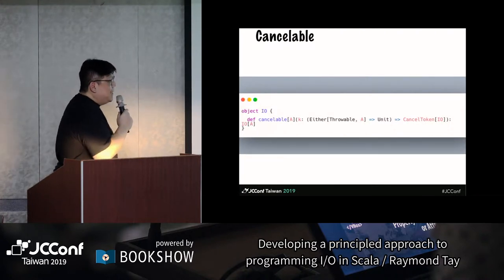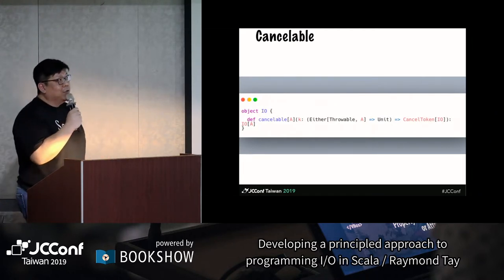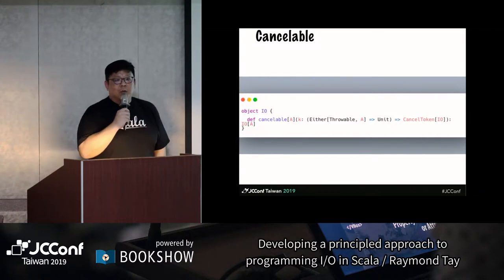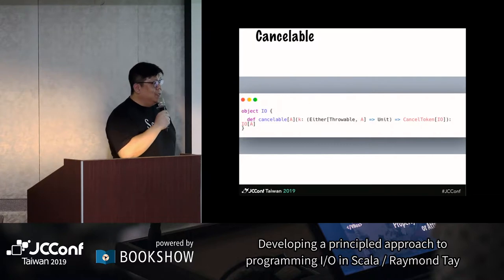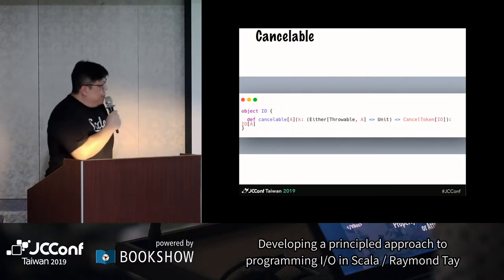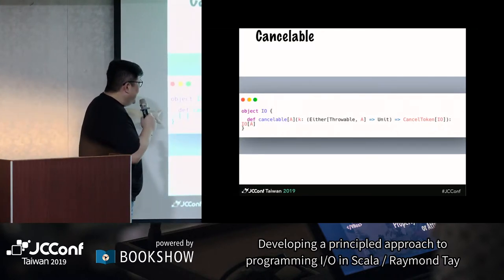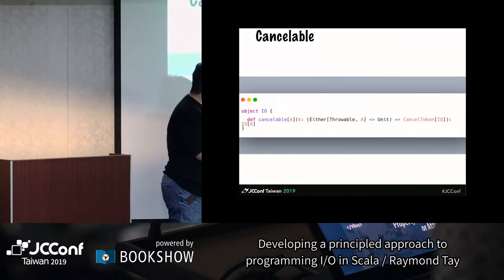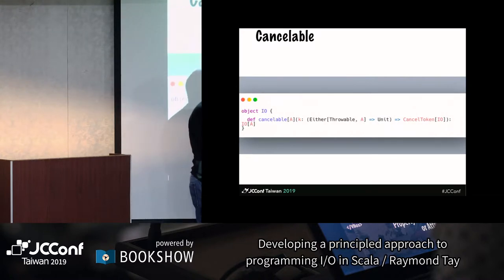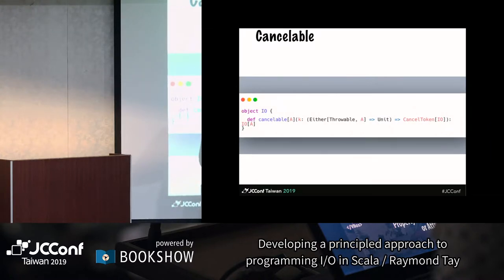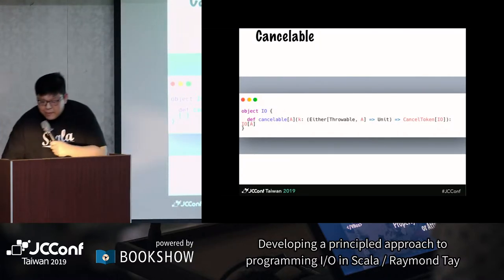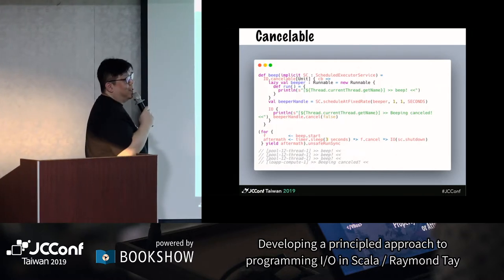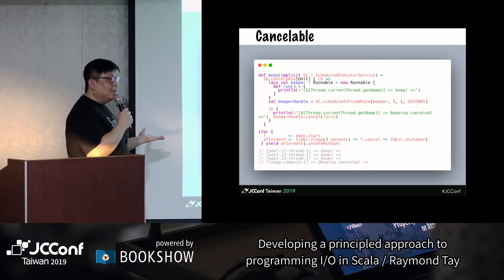The next thing is understanding cancelable. There are about three ways to be able to create something that is cancelable. Let me show you some gotchas of things to avoid when writing something that is asynchronous and concurrent but still cancelable. The general idea is that inside this object there is a definition of the cancelable, which basically means: in the callback, tell me whether this particular asynchronous process is going to succeed or not, and what happens when I cancel it — which is why they call it a cancel token.